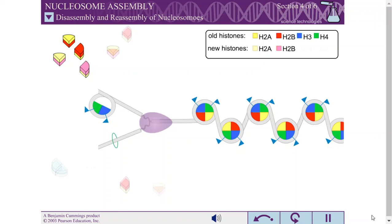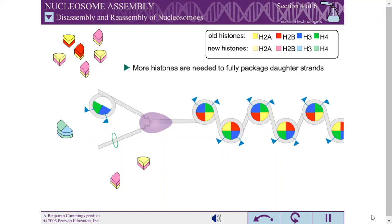Because the amount of DNA has doubled, more histones are needed to fully package the two daughter strands into nucleosomes.